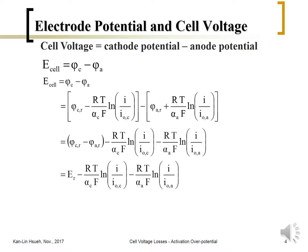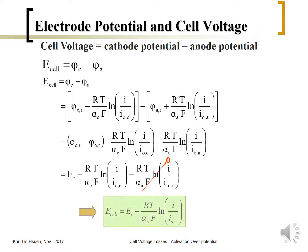For the PEM fuel cell, the exchange current density of the anode is much larger than on the cathode side — perhaps about three orders of magnitude larger. In this case, the anode term can be eliminated, and the cell voltage can be expressed as a function of current density. This means the oxygen reduction reaction is the major cause of cell voltage loss in the activation overpotential sense.